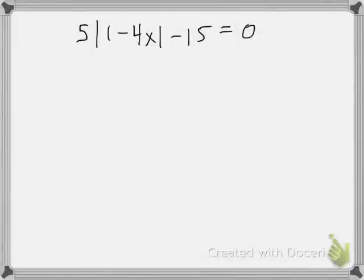I want to work an example for you guys where we have an absolute value equation but we've got a lot of stuff around it. So you can see how I have this minus 15, I have this 5 in front, and a lot of times when this happens you guys aren't sure where to start.